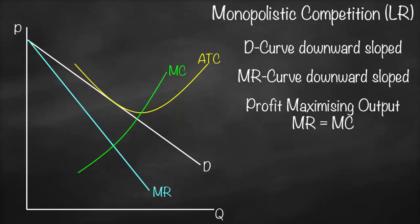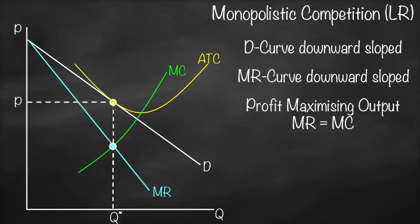Our profit maximizing output is where marginal revenue equals marginal cost. Our marginal revenue is the blue line, our marginal cost is the green line. The point of intersection is here — we go down to get our Q*, which is our profit maximizing quantity. Then I go up until I touch our demand curve and move horizontally, which gives me the price. You will discover that at Q*, our price is the same as average total cost.